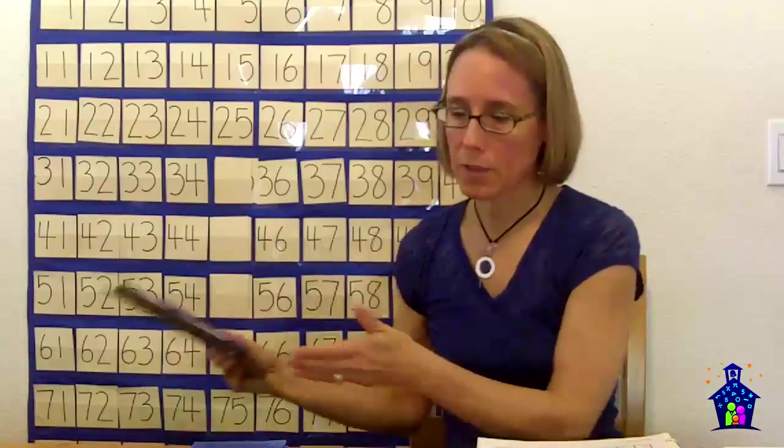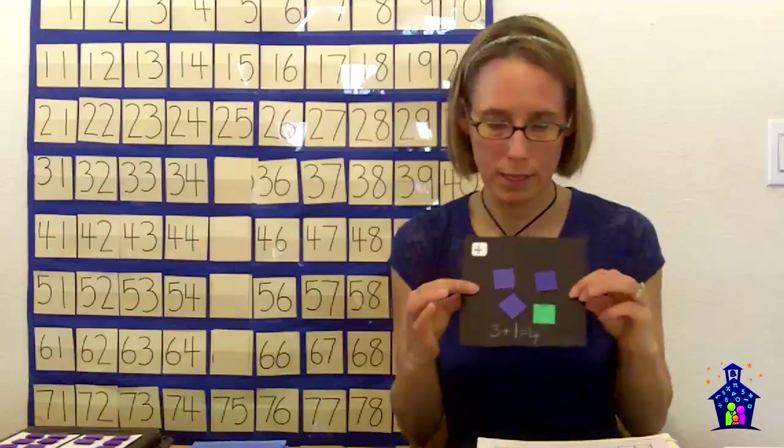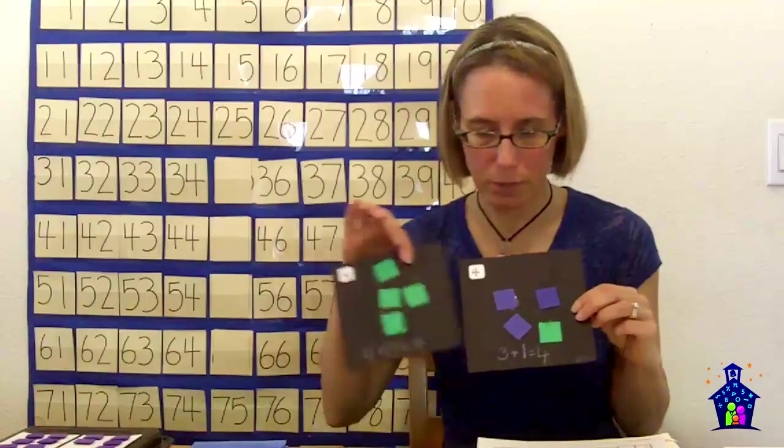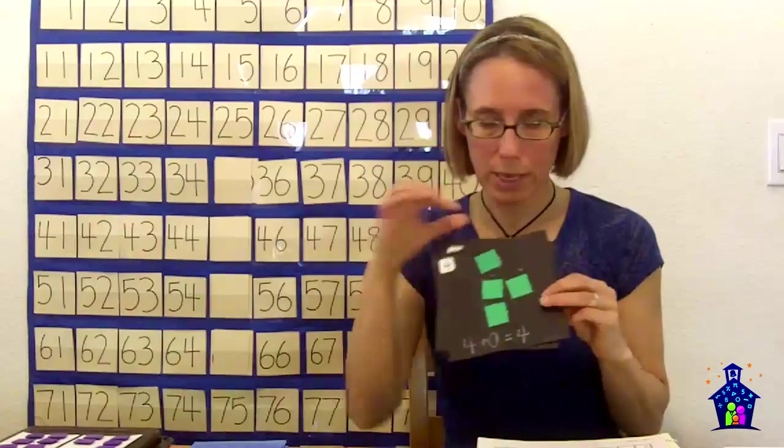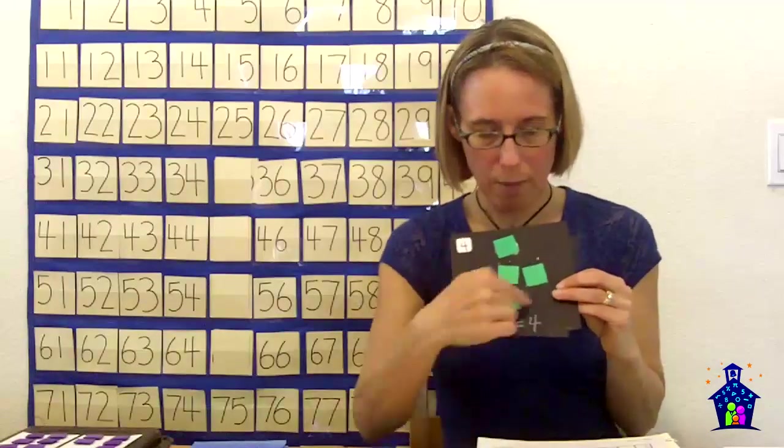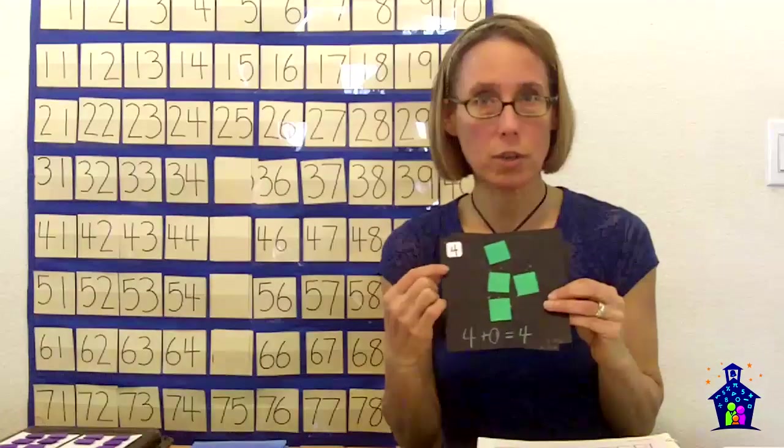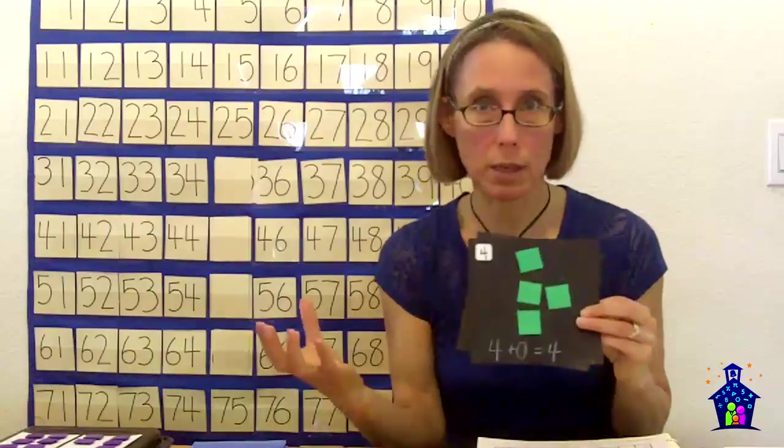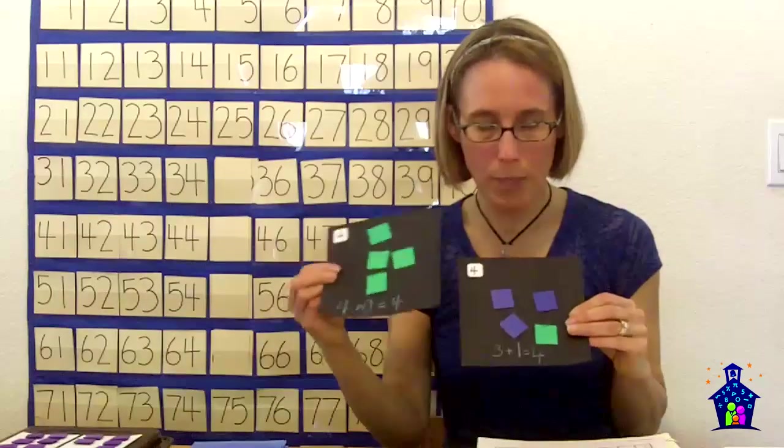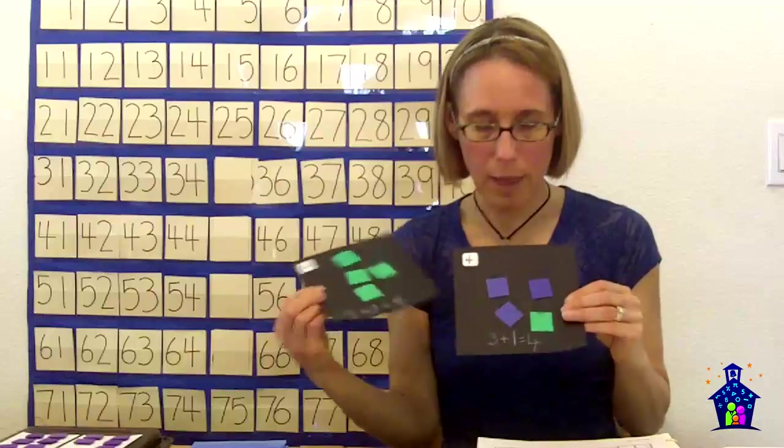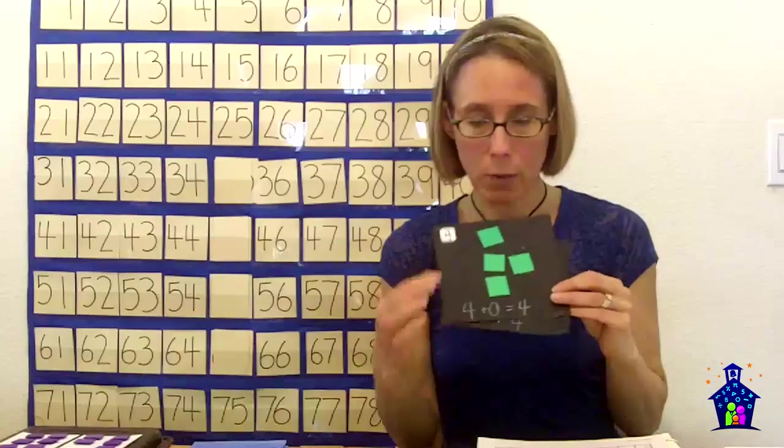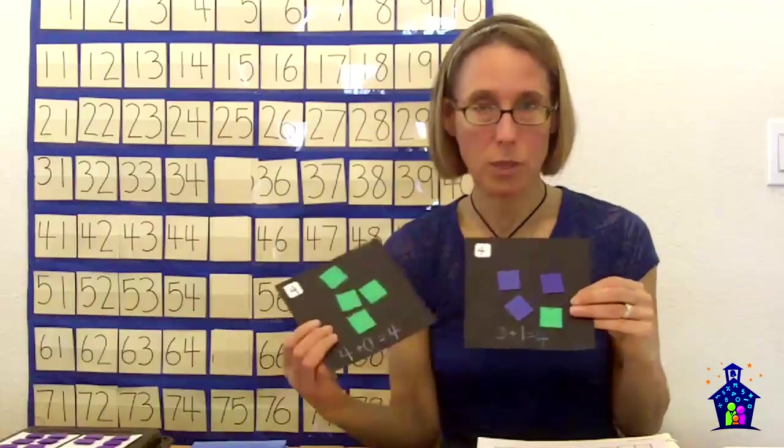The next thing I have students do is take those combinations and actually create cute little cards like this. Here's the combination of four. Here's another one. In this one we've got zero. Four little zero gets forgotten, but we need a combination of four as just three green tiles and no blue tiles. Some kids are ready for those equations at the bottom, and some kids can write them themselves.